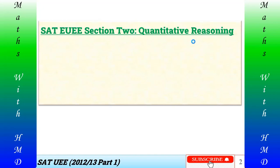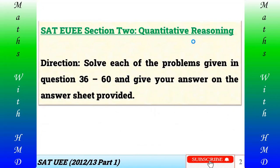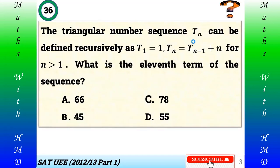Here we are going to discuss the scholastic aptitude test entrance exam section two, which is the quantitative reasoning part. The directions say: solve each of the problems given in questions 36 up to 60 and give your answer on the answer sheet provided. The quantitative reasoning part is given in question numbers 36 through 60, so we are going to start from question number 36.